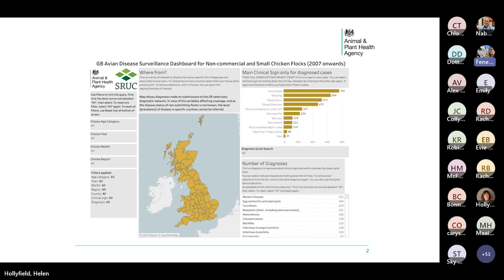Something useful to be aware of, as Harriet already mentioned, are the disease surveillance dashboards. These show the surveillance information gathered from submissions to our diagnostic network and are updated each month. The menu on the left allows you to select a region, time period and age group of interest, so you can see what the most common diagnoses have been in your local area. This slide shows the avian dashboard, covering data from non-commercial and small chicken flocks.